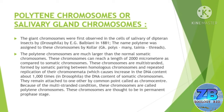The polytenic chromosomes are much larger than the normal somatic chromosomes. These chromosomes can reach a length of 2000 micrometers compared to somatic chromosomes. These chromosomes are multi-stranded, formed by somatic pairing between homologous chromosomes and repeated replication of their chromomata, which causes an increase in the DNA content about 1000 times in Drosophila.